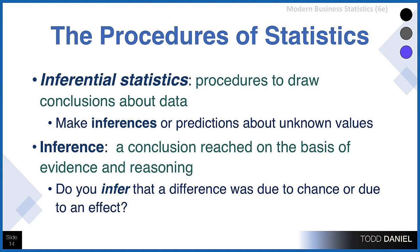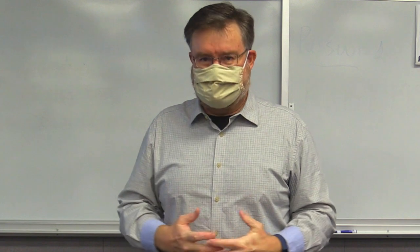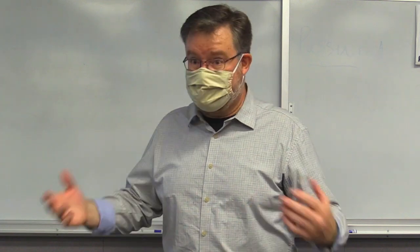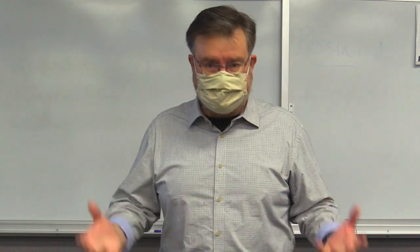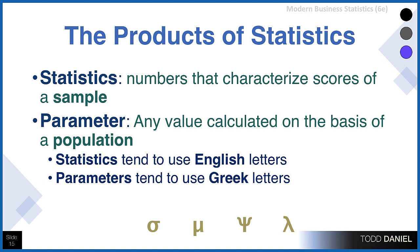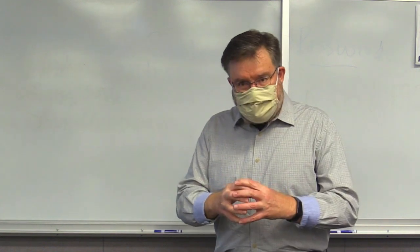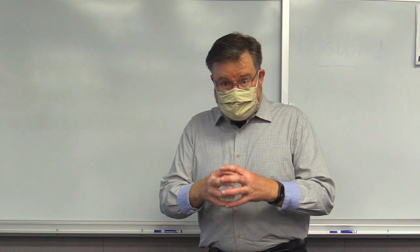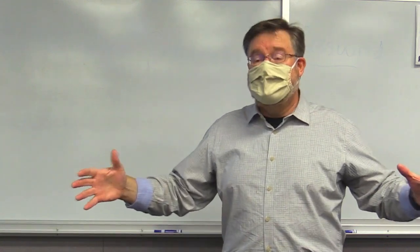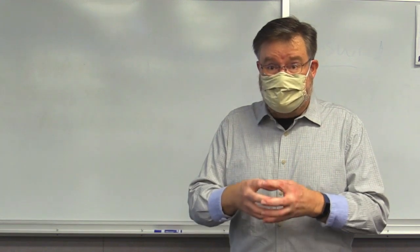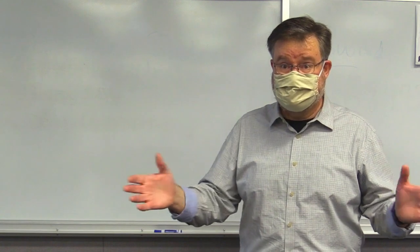The third thing I could mean when I talk about statistics is the products of statistics. When we calculate means and standard deviations, we are running the statistics. We want to know something about a small group that applies to a larger group. We could get the mean of a sample, but we could also get the mean of a population. What we'll find is that the mean of a representative sample is usually a good estimator of the mean of the population from which it was drawn.